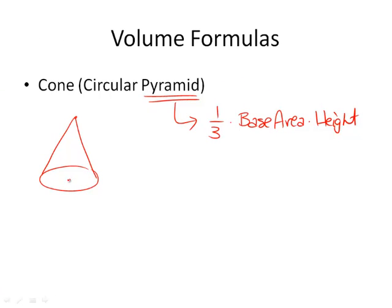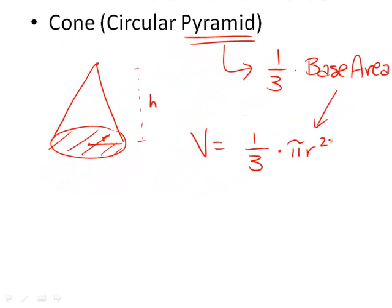Let's take that if our radius here is r and our height is h. The volume of our cone would be one third times the base area. The base area is a circle and therefore is pi r squared, and then times the height. So it's one third pi r squared h is our volume formula for the cone.